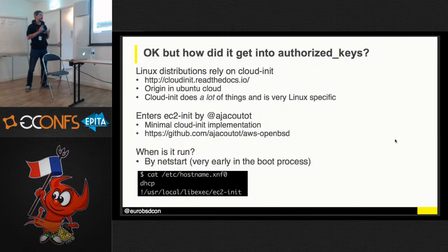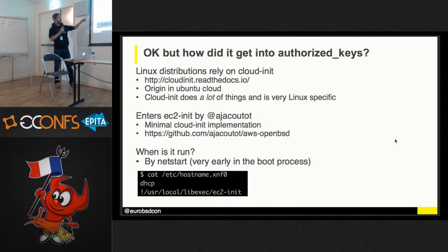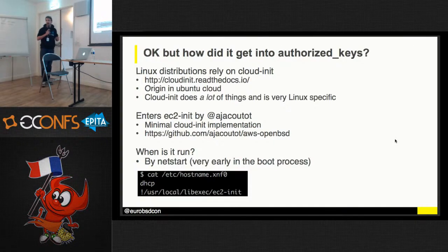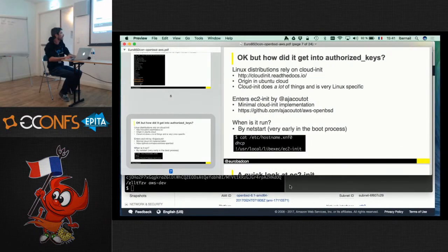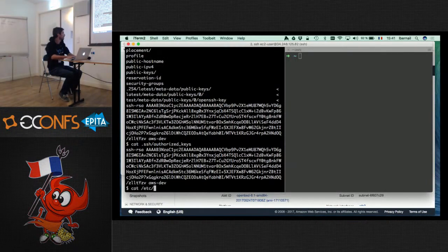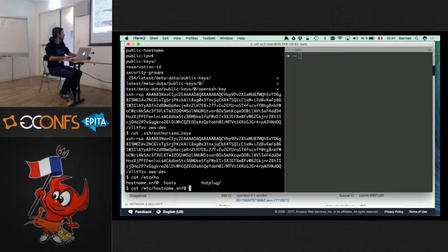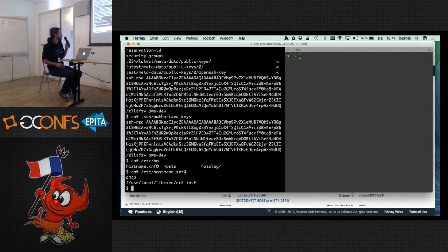CloudInit does a lot of things, but it's a very big piece of software in Python and it's very Linux-specific. In order to have a minimal CloudInit implementation, Antoine wrote EC2Init. This tool is run when the machine is starting — very early in the boot process — because it's started when the network interface comes up. We can have a quick look at this file: when the interface comes up, it's configured using DHCP, which is the normal way to do things in AWS, and then it executes the EC2Init script.